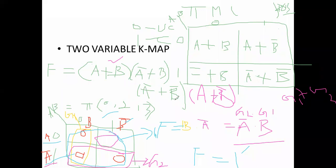Based on which variables the group covers — A, A bar, B, B bar — you get the simplified expression. All of you practice this. Yesterday's class and today's class, up to two variable K-map is over. Next class we start the three variable K-map. All of you practice yesterday's class and today's class and listen to the videos if you have any doubt. Thank you.